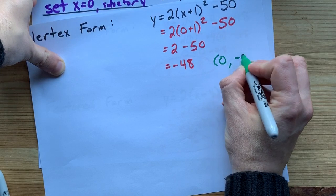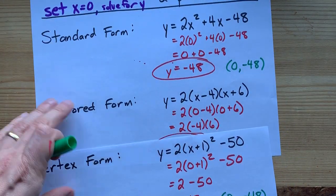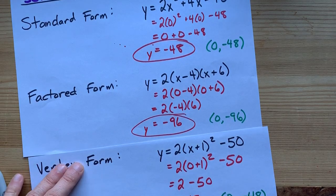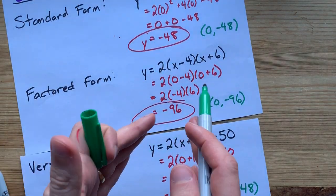And the coordinates are 0 comma negative 48 for this one as well. Just throwing it out there. It's not too much. It's not hard work. You just have to remember to let x be 0. Best of luck.